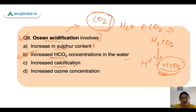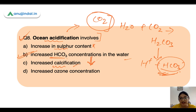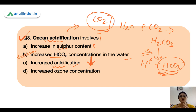Regarding the other options — calcification: marine organisms secrete calcium carbonate for their shells. Due to ocean acidification, the calcification process actually decreases, not increases, because the acidic conditions cause dissociation of calcium carbonate aggregates. So calcification is not increased but decreases. Increased ozone concentration is also not relevant to ocean acidification.